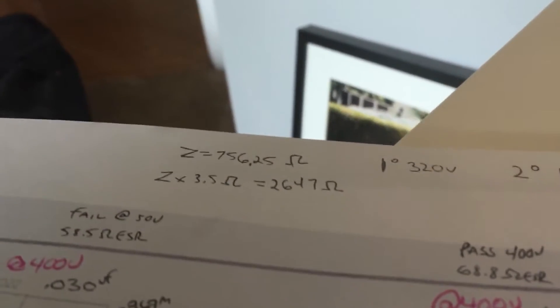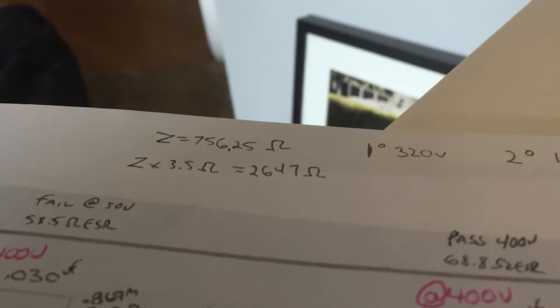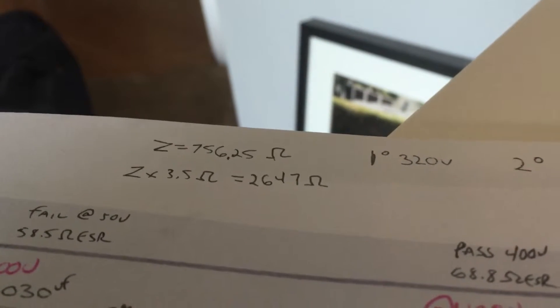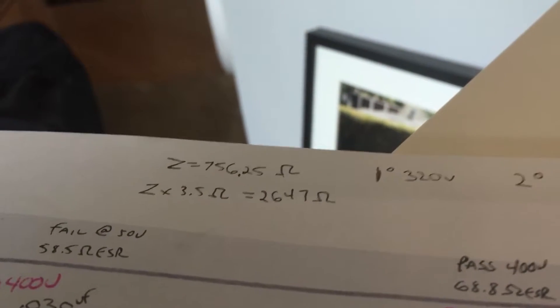I took the Z, which is the ratio squared, 27.5 times 27.5, and I ended up with 756.25.